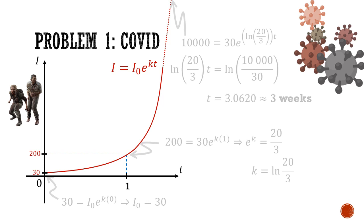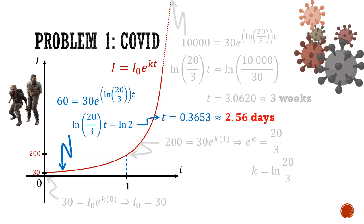So in part 2, we want to find the doubling rate in days. So to find this, we just need to find when the infected population reach 60, because 60 is double of the initial case of 30. And we'll just sub in i equals 60 equals i0 30 times e to the power of k, which is ln 20 over 3 times t. Once again, we convert this exponential equation to a logarithmic equation. Make t the subject. We will see that it's about 0.365 weeks. So multiply that by 7. That will be 2.56 days. This tells us that every 2.56 days, the number of cases double.